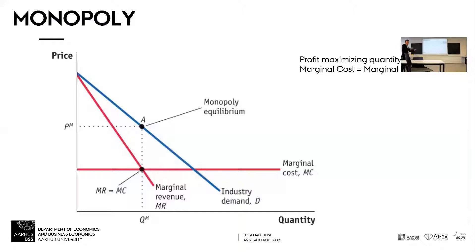Marginal revenue is how much your revenue increases when you produce an additional unit of output. We choose at the margins, so we start at zero quantity. We produce an additional unit of output, and our marginal revenues are much larger than the marginal costs, so we produce that because our revenues increase more than our costs increase.